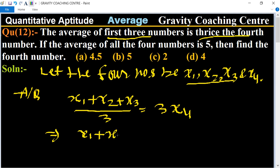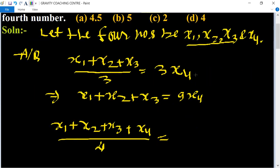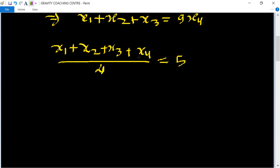According to the question, the average of all four numbers is 5, meaning (x1 + x2 + x3 + x4) / 4 equals 5. The sum of x1 to x3 is 9x4.